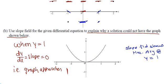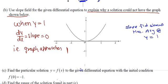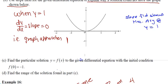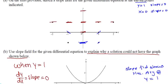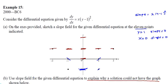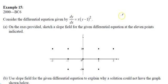Parts A and B are usually worth no more than one point each. Part C says: find the particular solution to the given differential equation with initial condition f(0) = -1. I recommend taking out notebook paper to show work because part C is worth at least four points. I'm going to use the white space here.